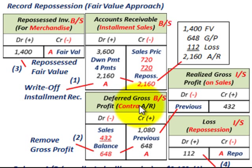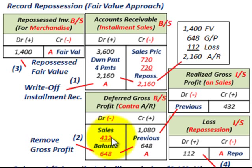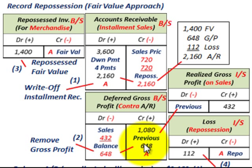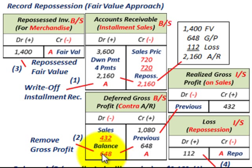Moving to the deferred gross profit account — remember, that's a contra to accounts receivable. We started with deferred gross profit of $1,080 at the time of sale. Prior to repossession, we had recognized and reduced it by $432, crediting $432 as realized gross profit on the income statement. That brings us down to a balance of $648 at the repossession date. We now remove this gross profit from the balance sheet by debiting the deferred gross profit account for $648.